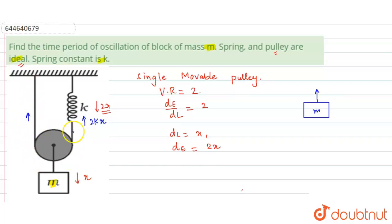And same is the force here, because this is a common string. So 2kx force will also be acting here. So what is the total restoring force that will act on this block in the upward direction? It will be 4kx. So this will be the restoring force and it will act towards the mean position. It will always act towards the mean position. So we can write this as 4kx.